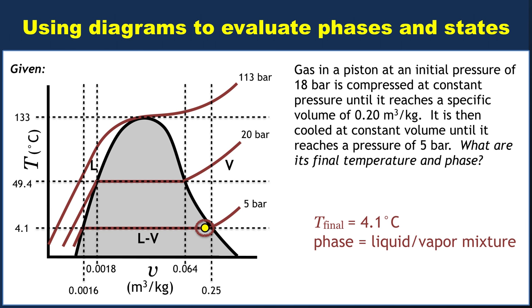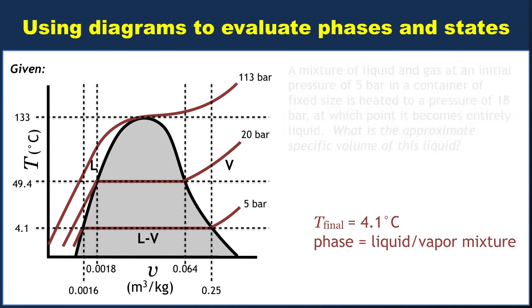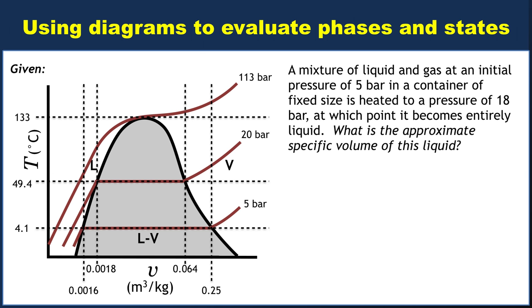I want to get a little more practice using this particular TV diagram, but in trying to answer a different question, so let's get rid of the question and its answer that we currently have up there and replace it with this. A mixture of liquid and gas at an initial pressure of 5 bar in a container of fixed size is heated to a pressure of 18 bar, at which point it becomes entirely liquid. What is the approximate specific volume of this liquid? The key detail in the statement of this problem is the container of fixed size.